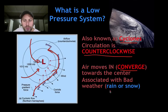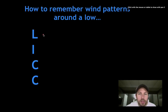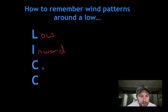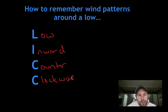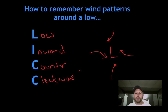Low pressure systems are also associated with rain or snow — really any bad weather. A way to remember low pressure systems is with the acronym LICK: Low pressure, Inwards, Counterclockwise. So if we draw a low pressure system here, the air moves inwards and counterclockwise. There's your low pressure system, or typical air movement around a low pressure system.